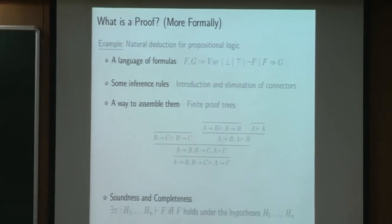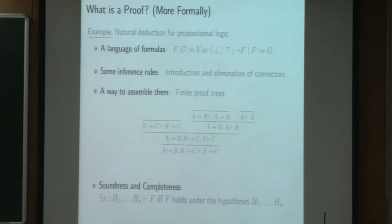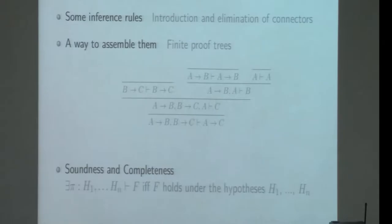For instance, if we take the example of the natural deduction for propositional logic, the language will just be the propositional set of propositional formulas. We have some inference rules which correspond to the introduction and the elimination of the different connectors. And we can assemble them as a proof tree which looks like this. And we know that there exists a proof of a given sequence H1 to HN dash F if and only if F holds under the hypothesis H1 to HN.